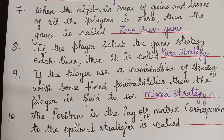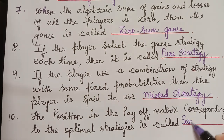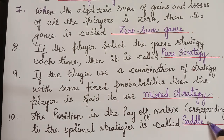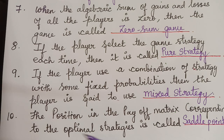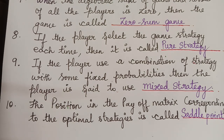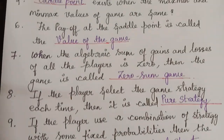The next question is: the position in the payoff matrix corresponding to the optimal strategy is called the saddle point. This is another way of defining the saddle point — the position in the payoff matrix corresponding to the optimal strategies is called the saddle point. Hope you have understood all the one-mark questions from game theory.